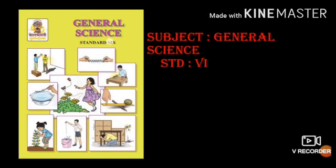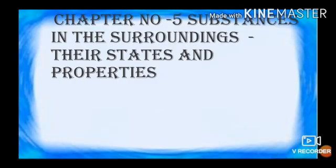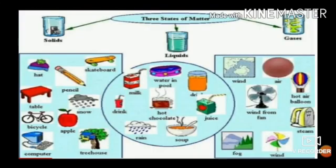Subject: General Science, Standard 6, Chapter 5: Substances in Surrounding, Their States and Properties. In our day-to-day life, we see so many substances in our surroundings. In what state do they occur? In nature, every substance occurs in a specific state.